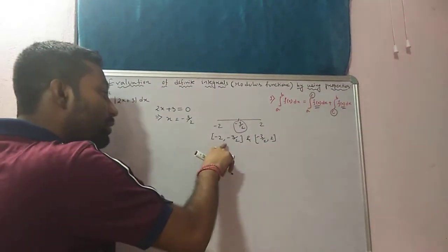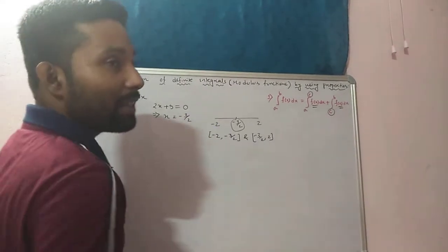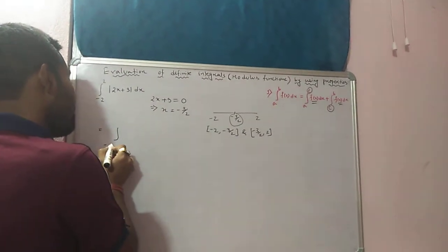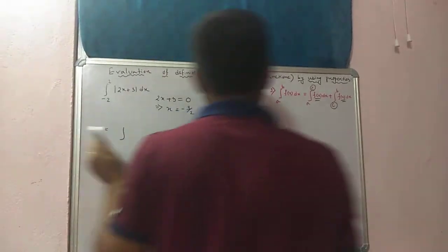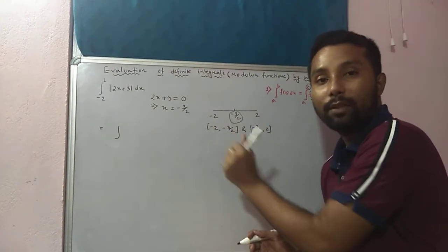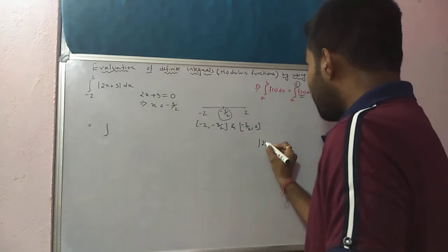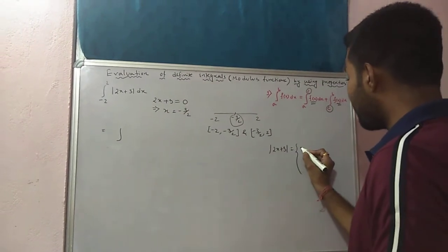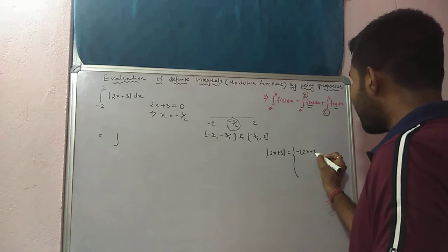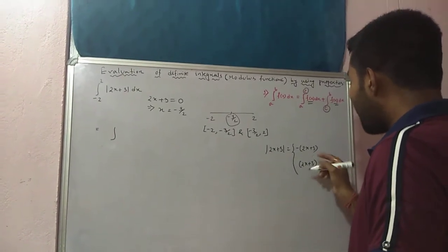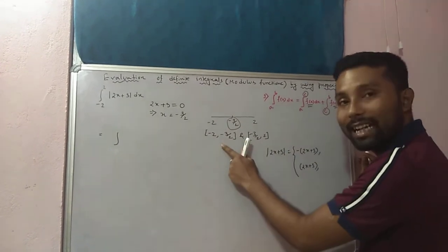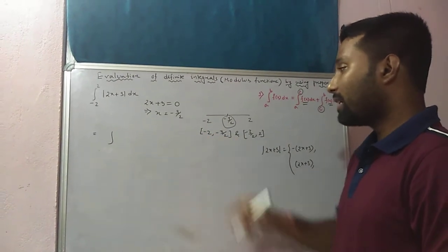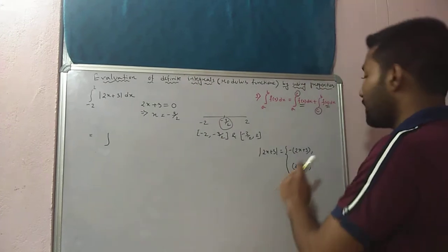Now you have to find in which interval the function is positive and in which interval it is negative. Modulus of (2x + 3) equals minus of (2x + 3) or plus of (2x + 3) depending on the interval. For any value between minus 2 and minus 3 by 2, check the sign — put any value from that interval.